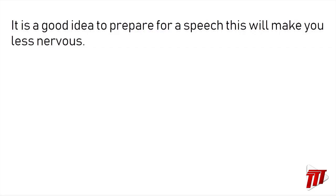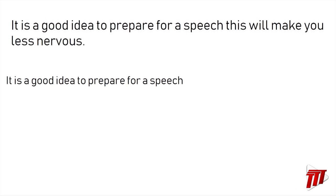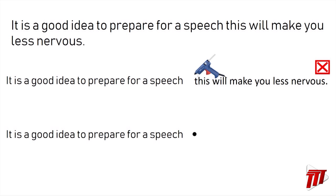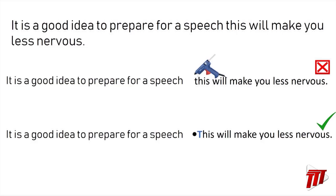Let's look at this run-on sentence: "It is a good idea to prepare for a speech this will make you less nervous." We have two independent clauses. "It is a good idea to prepare for a speech" — that's one complete thought. "This will make you less nervous" — that's another. We can't fuse them together, and we can't use a comma. So the fix is: "It is a good idea to prepare for a speech." Add a full stop, then start another sentence: "This will make you less nervous." The easiest fix is to add a full stop and create separate simple sentences.